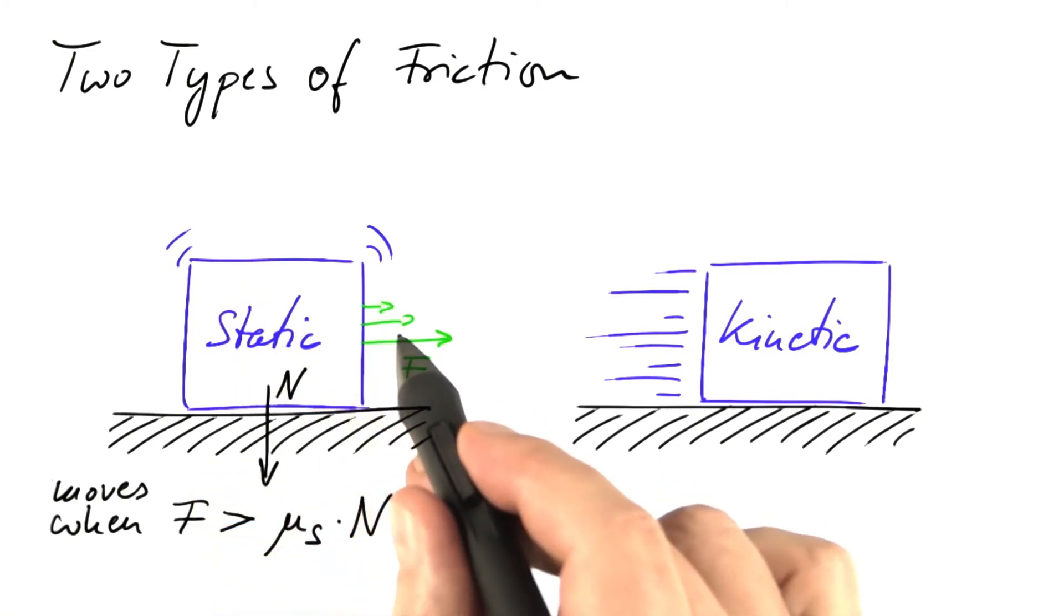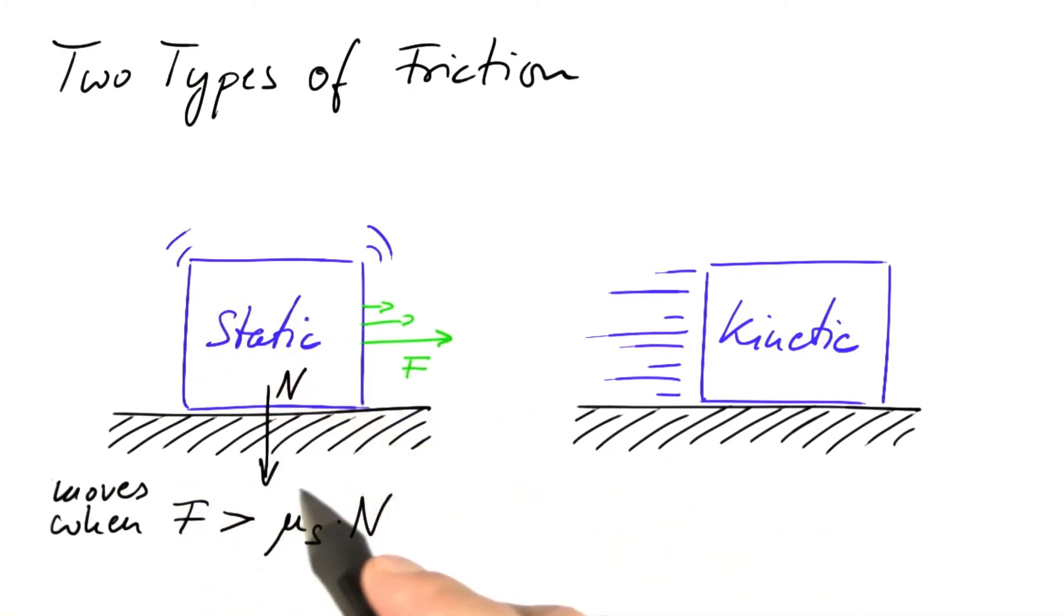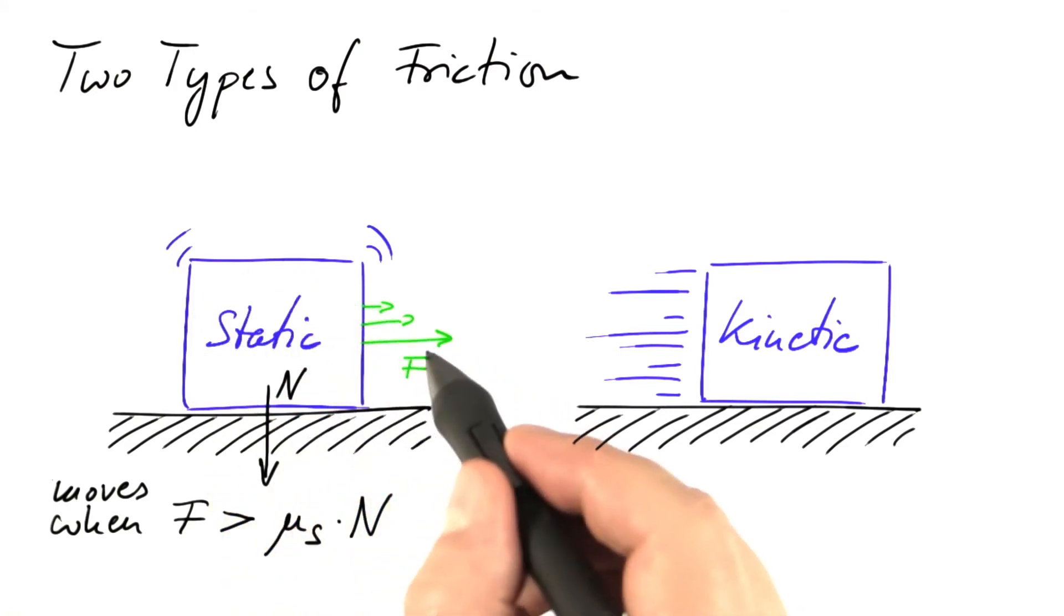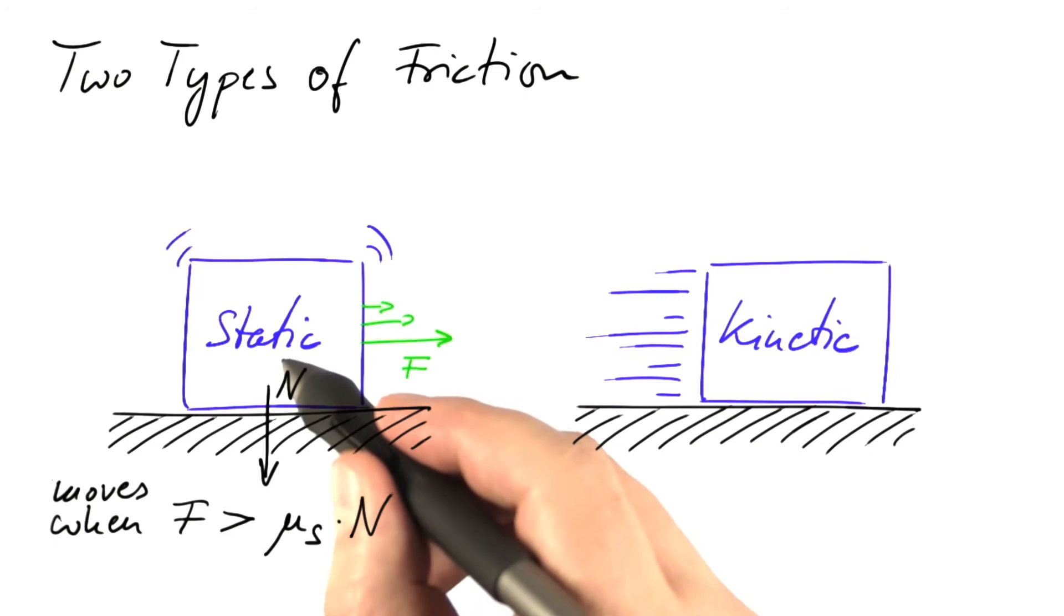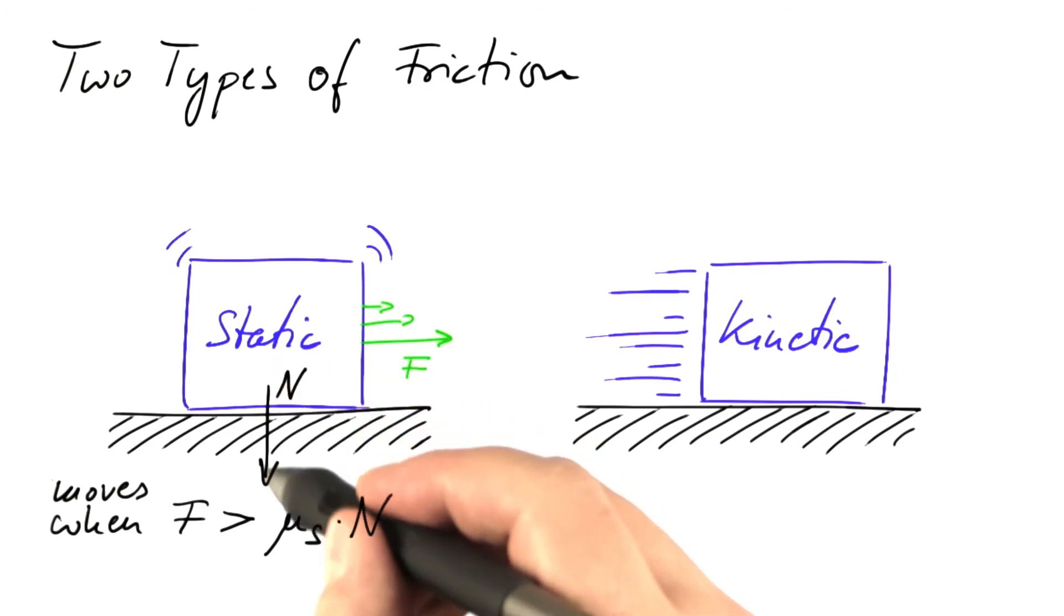If we apply less, it remains static. Typically, this coefficient of static friction ranges between one-third and 1, which means that typically, to set an object in motion, you need to apply less force sideways than the force with which gravity pulls that object down.